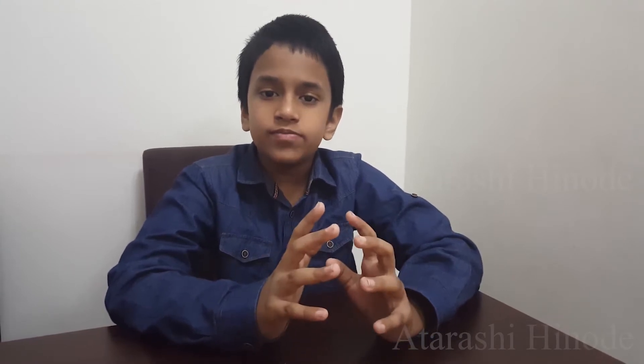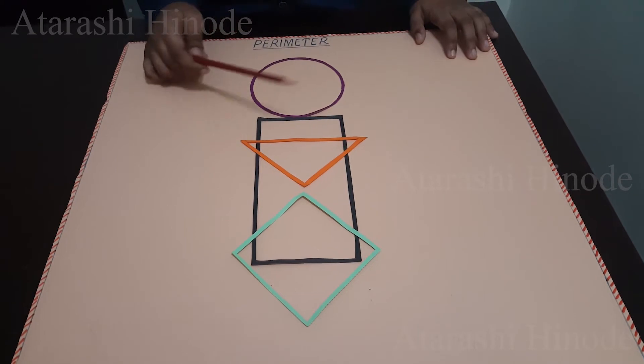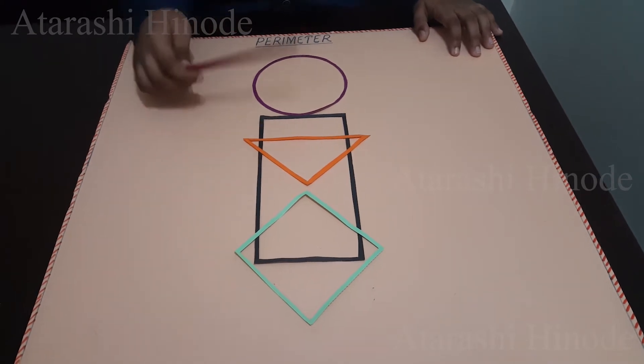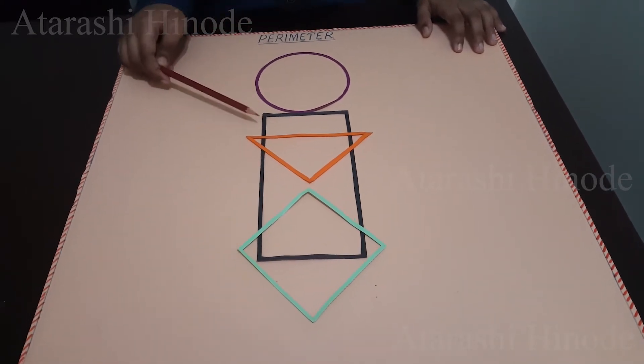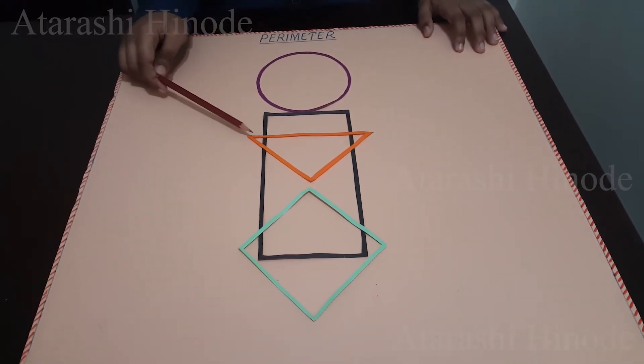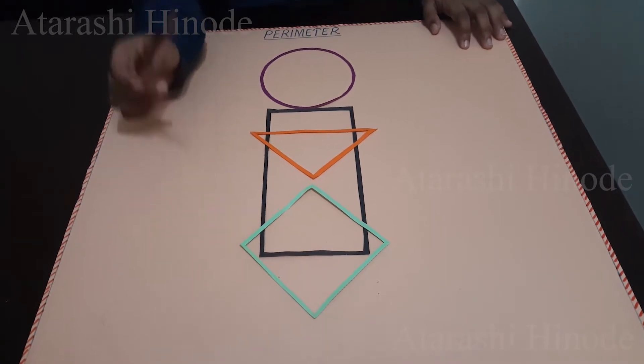So first, what is perimeter? In Greek, the word peri means around and meter means measure. Therefore, perimeter means measuring around a figure. Here I have taken some figures: a circle, a rectangle, a triangle, and a square.